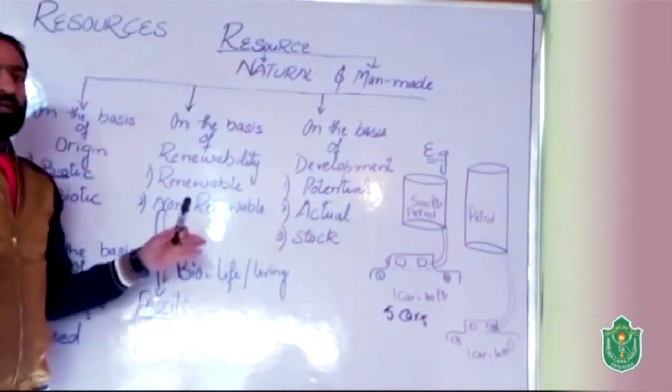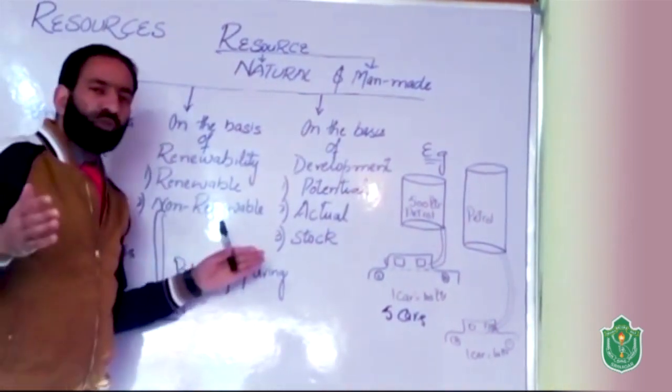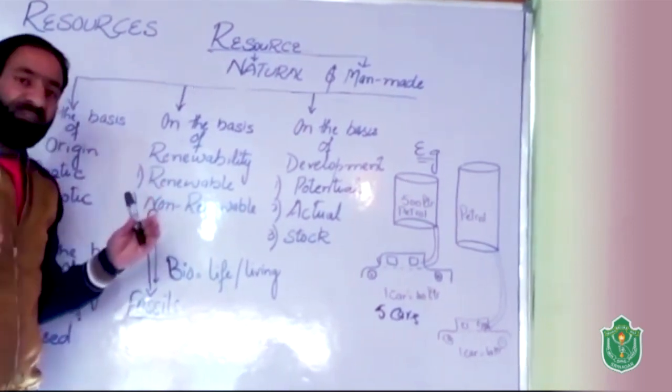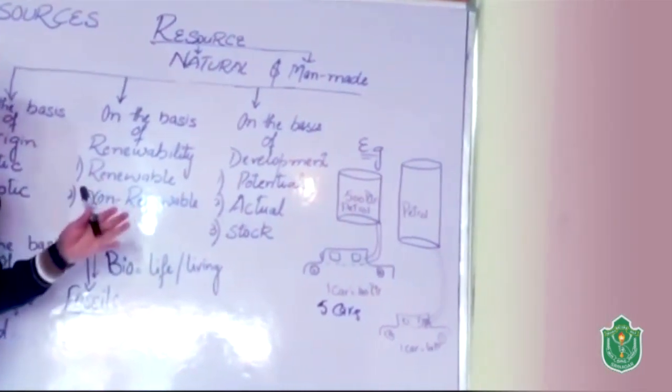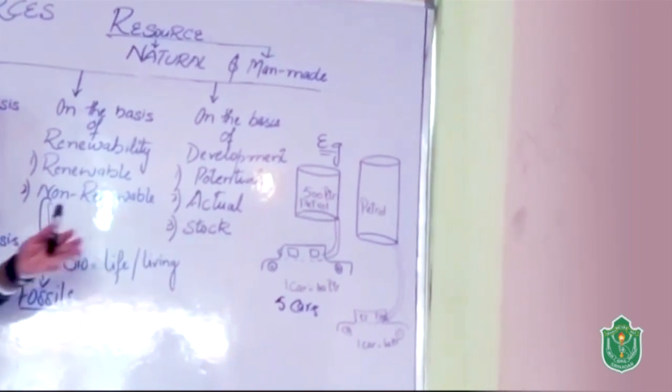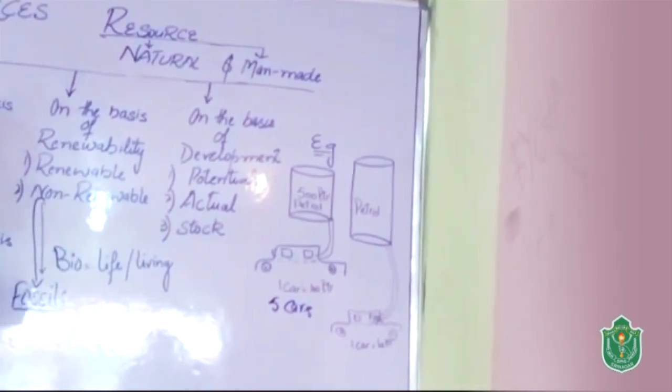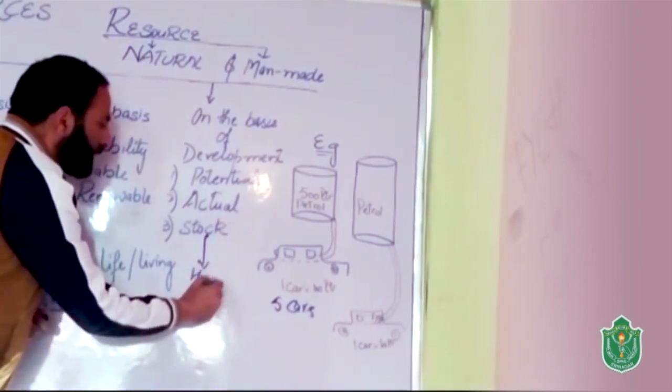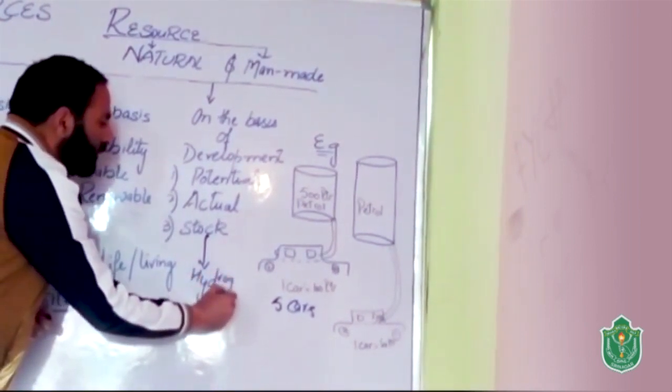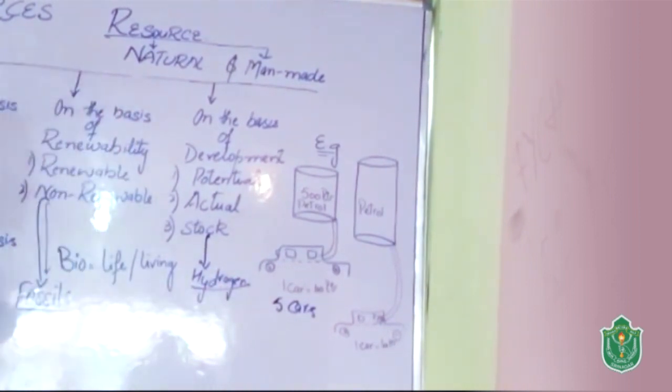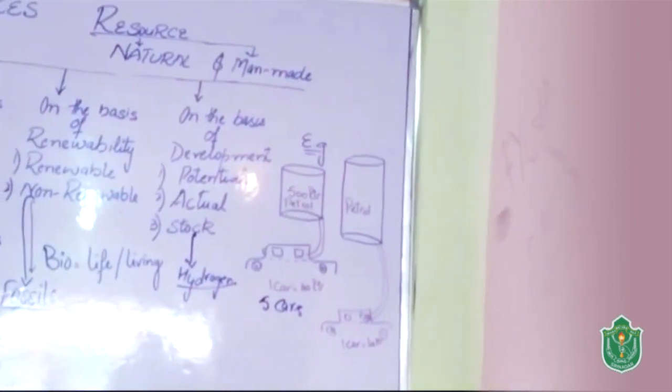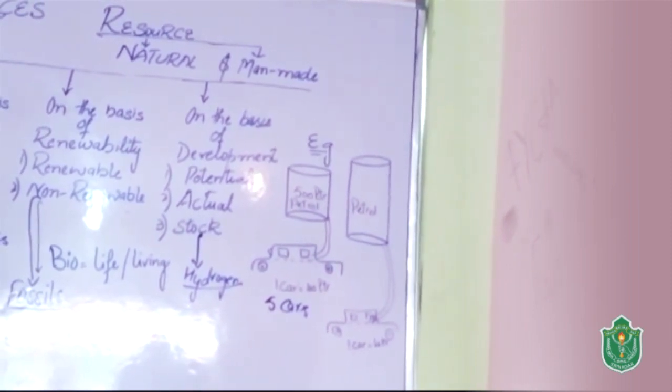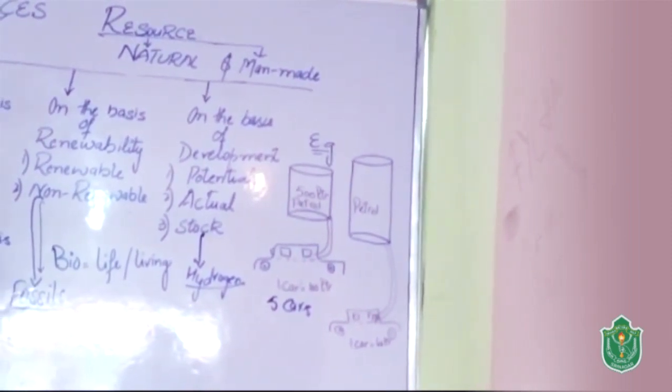Now, what is stock? Stock resources are those resources which we are knowing, which have been surveyed but not yet been harvested. We do not have technology like the example of hydrogen. We are knowing hydrogen has great potential, but we are not knowing how to harness hydrogen, how to use hydrogen in generating electricity.